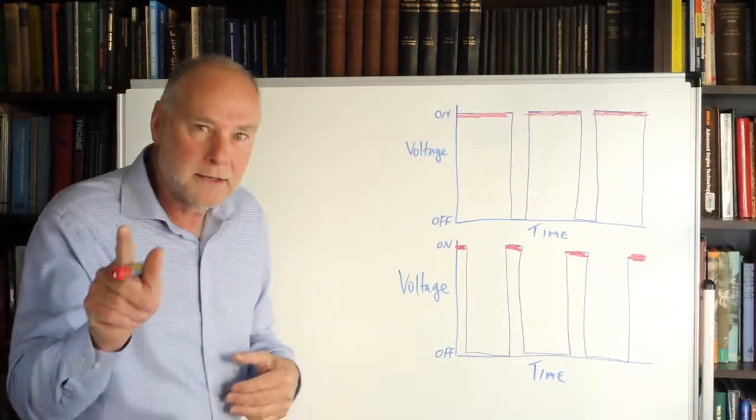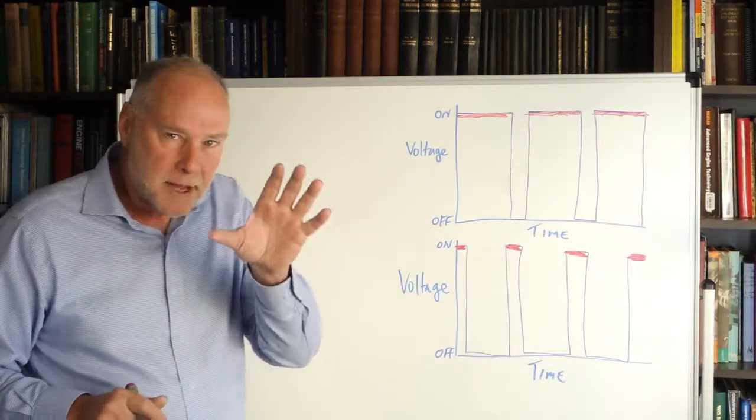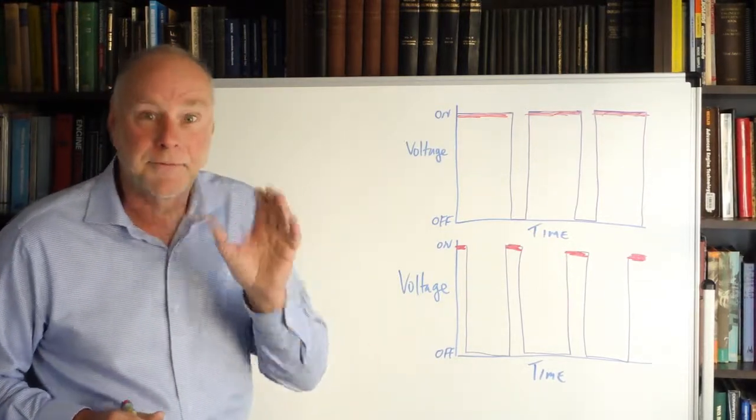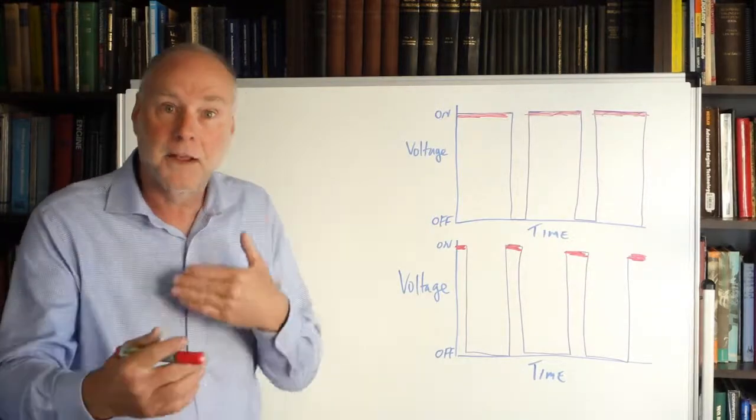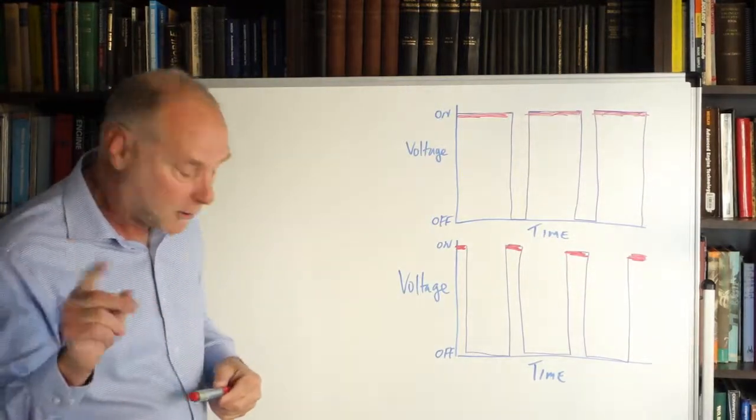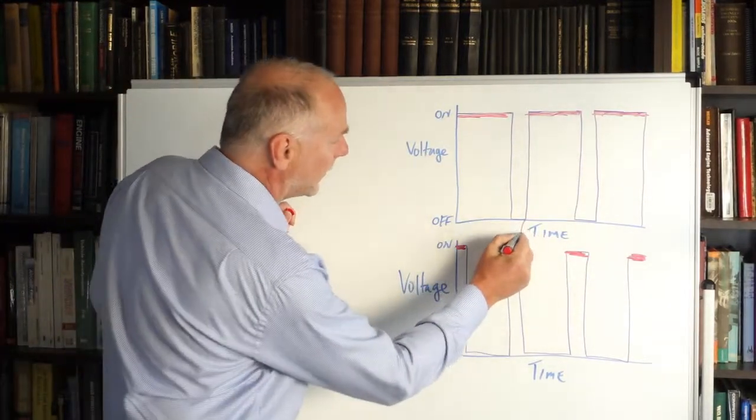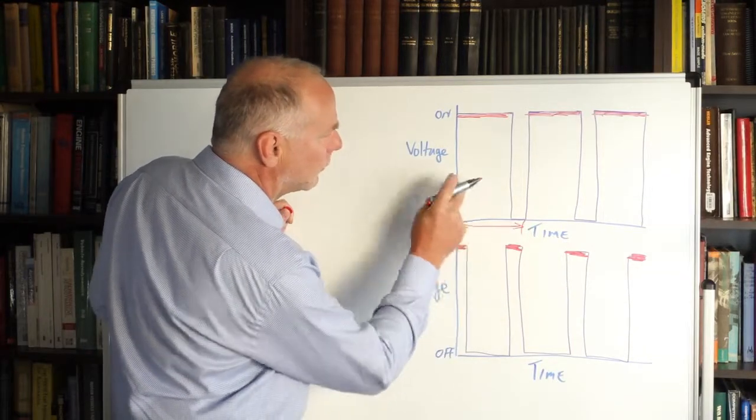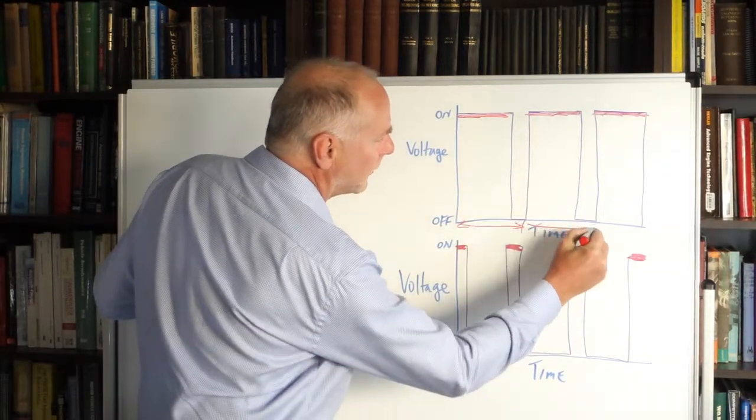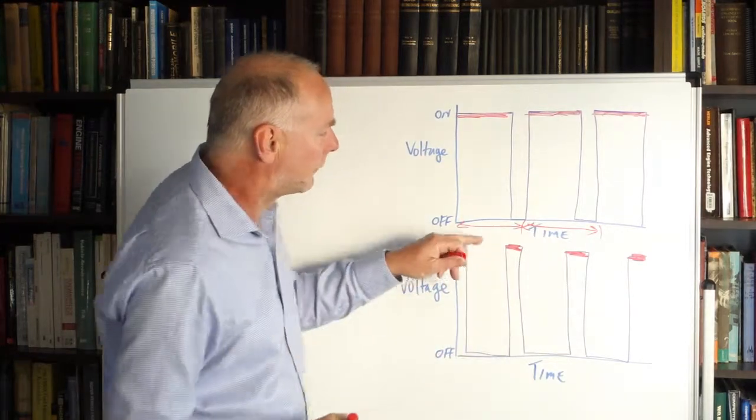There's one other thing to look at as well. We've talked a bit about duty cycle, but there's another element, and that's frequency, how often the on-offs are occurring. Let's have a look at that. There's one cycle, one on and one off. There's one cycle, one on and one off.